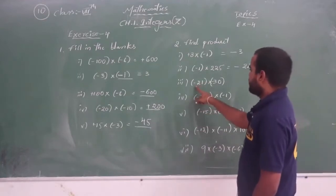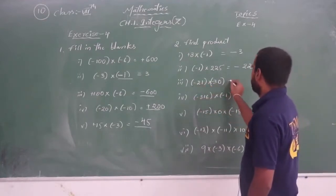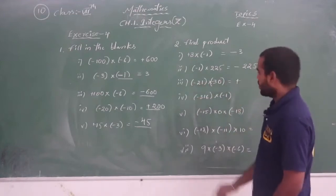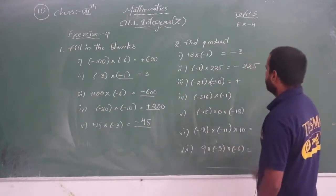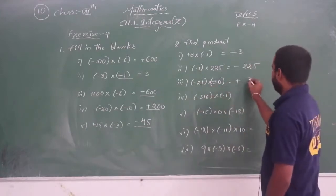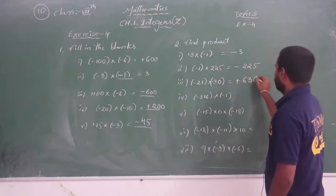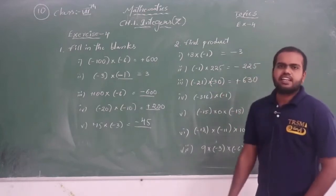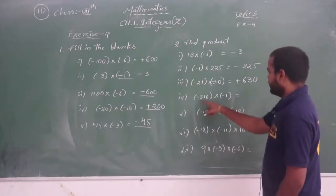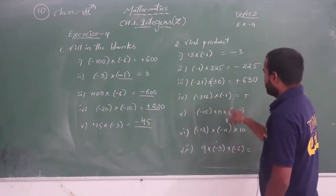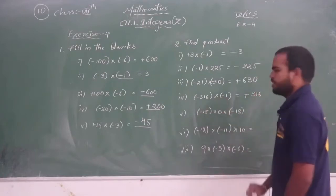What about the next? Minus 21 into minus 30. Minus into minus — first the sign is plus. 21 times 3 is 63, and with the zero it is 630. So the answer is plus 630. Now see the fourth one: minus 1 into minus 316. Minus into minus is plus. 1 into 316 is 316, so the answer is plus 316.